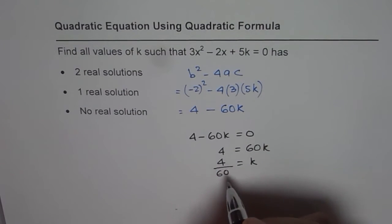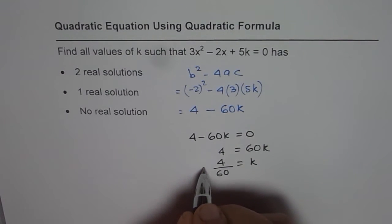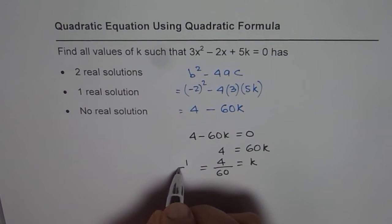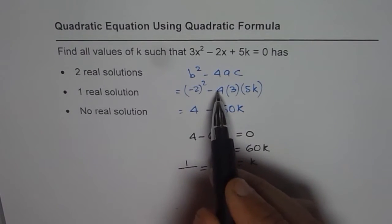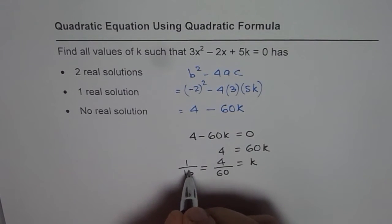This can be simplified a bit, so we can write this as k = 1/15. I could have divided by 15. So that is what it is.